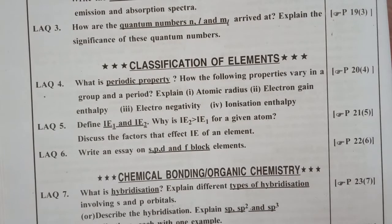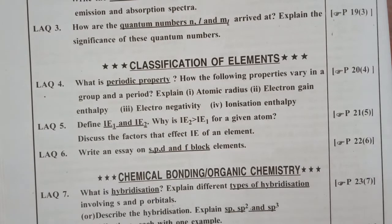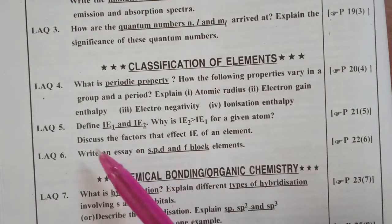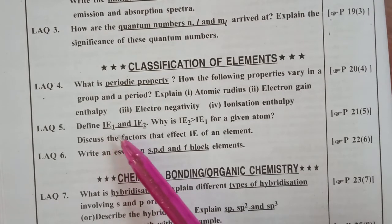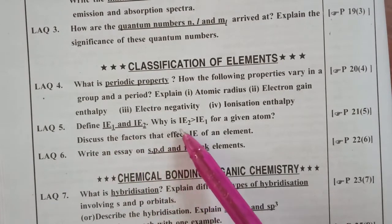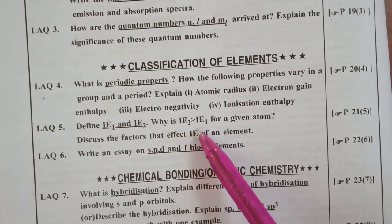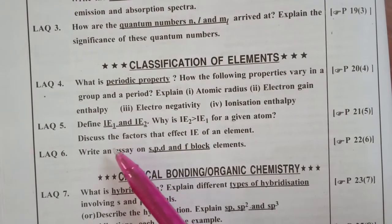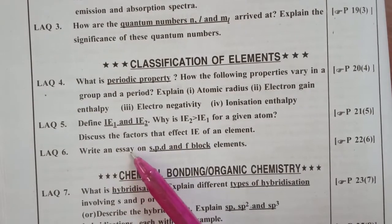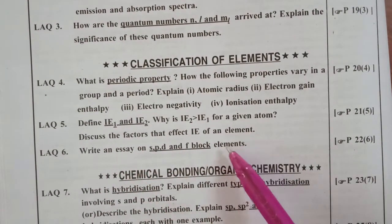When you are going in a group or period, it is very important. Next question, define IE1 and IE2. Why is IE2 greater than IE1 for a given atom? So this is also very important.